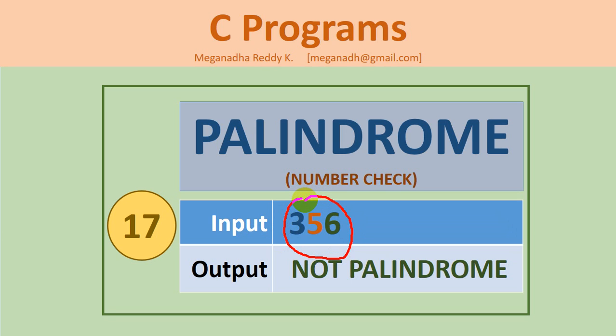A number is said to be a palindrome if the reverse of the same is equal to the same number. Let's take for example, the reverse of 356 is 653. So these two are not equal, so this is not a palindrome. Let's take another example 121. If you reverse this 121 you'll again get 121. So this is said to be a palindrome.